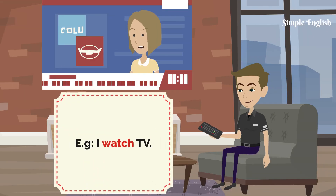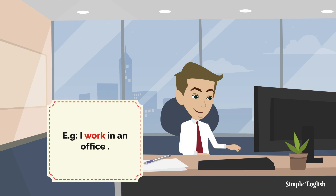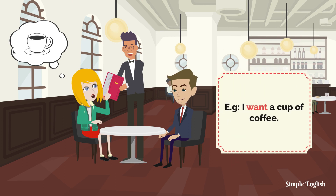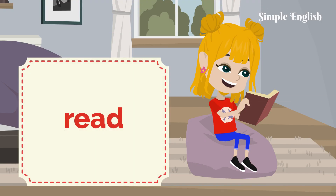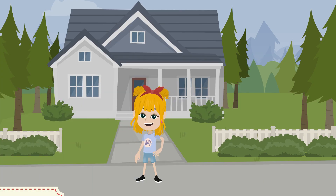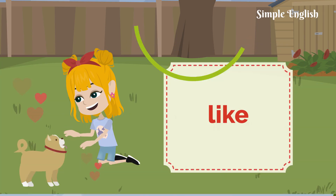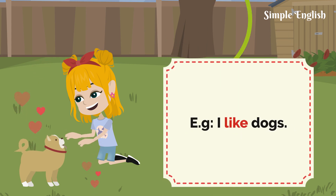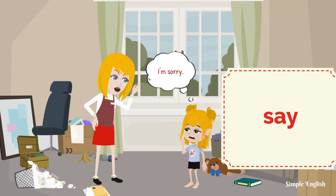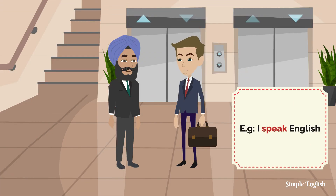Watch — I watch TV. Work — I work in an office. Want — I want a cup of coffee. Read — I read a book. Live — I live in a house. Like — I like dogs. Say — I say sorry. Speak — I speak English.